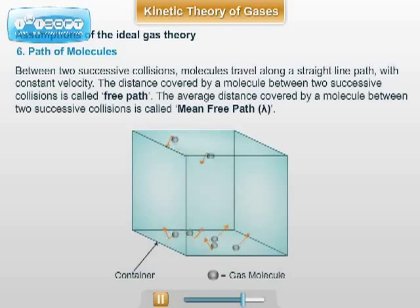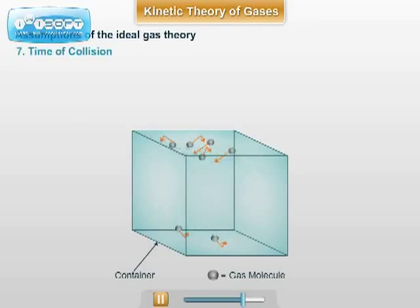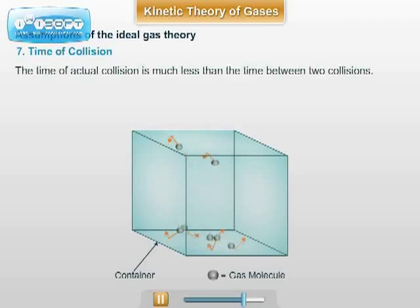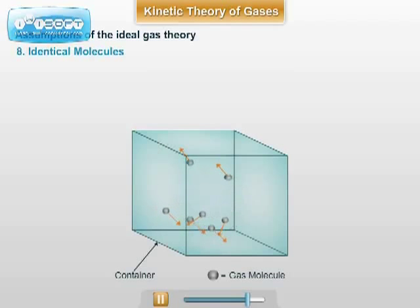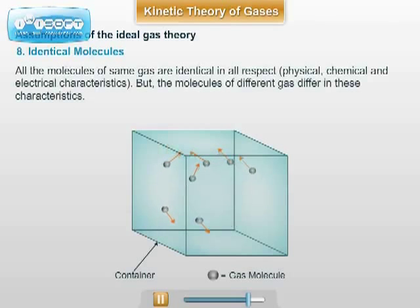Time of collision: The time of actual collision is much less than the time between two collisions. The collision may take place for a microsecond, and between two successive collisions, time in seconds may lapse. Identical molecules: All the molecules of same gas are identical in all respects. That is, the molecules will have same physical, chemical, and electrical characteristics. But the molecules of different gases differ in these characteristics.